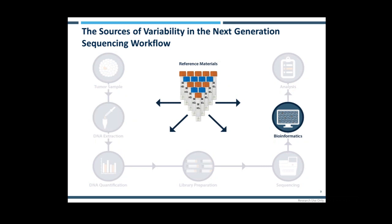The main focus for today's webinar is the bioinformatics step of the NGS workflow. While the analysis itself can introduce a level of variability, contributions from the other stages in the workflow can culminate into artefacts in the data. Alessandro will describe in more detail the effects of formalin on your analysis and the role well-characterised reference standards can play in optimising your workflow.